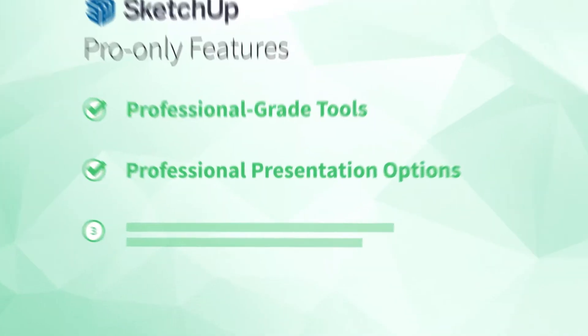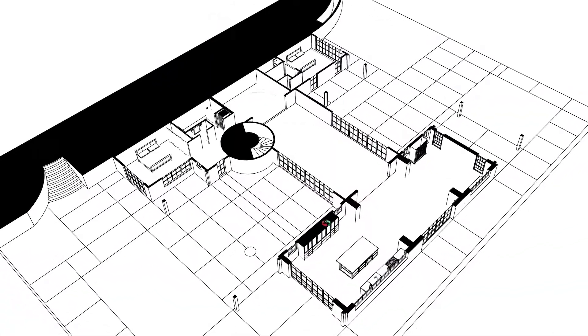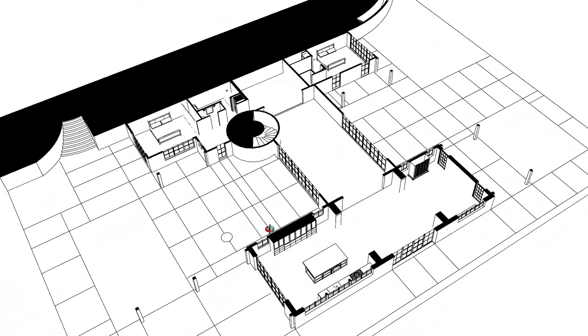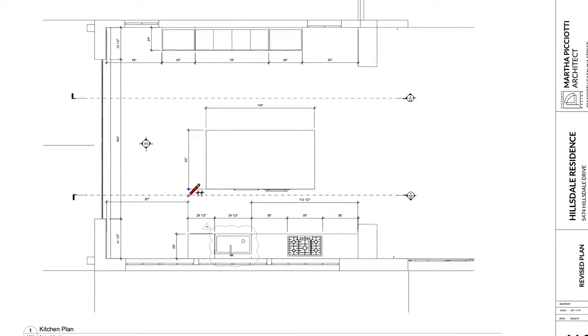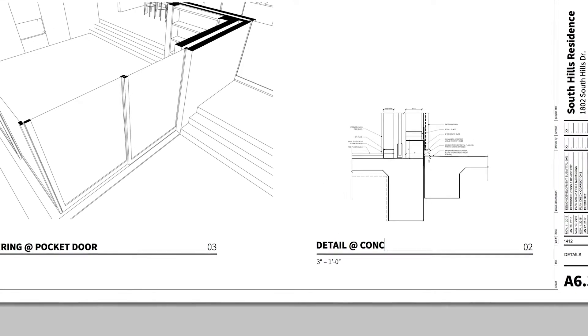Alright, that brings us to the final key feature. Number three: professional-level documentation. When you finish building your 3D model in SketchUp, that usually isn't the end of the story. You'll often need to take that model and create things like 2D floor plans, elevations, sections, details, maybe even a full set of construction documents.